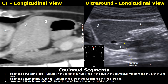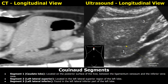Down here you see a hyperechoic bright line — this is the ligamentum venosum. Just below this white line is the caudate lobe. So in this view you will see segments 1, 2, and 3. This hyperechoic border around the caudate lobe is the ligamentum venosum, and it is a landmark for locating the caudate lobe in this view.